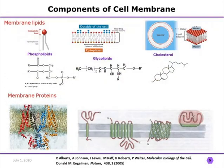Next, I will discuss the components of the cell membrane. The cell membrane contains membrane lipids and membrane proteins. There are three types of membrane lipids: phospholipids, glycolipids, and cholesterol. Membrane proteins are proteins bound within the membrane, and there are two types: integral membrane proteins and peripheral membrane proteins. In this picture, the green regions represent integral membrane proteins and the red regions represent peripheral membrane proteins.